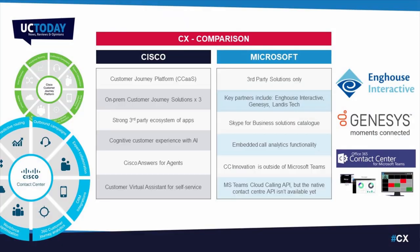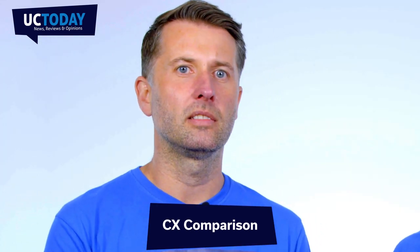Now we come to the customer experience proportion of the UC stack, which is incredibly important. Cisco potentially has the edge there because of their history within contact center provision. Cisco have a huge history with contact center and a massive portion of the market — they could even be the market leader in the on-prem world. Since the acquisition of BroadSoft, they've taken on CC One, now called Customer Journey Platform, which is a pure cloud CCaaS-delivered solution and highly capable. There's quite a lot of complexity connecting the legacy world with the cloud world and new acquisitions, but they are connecting these worlds together.